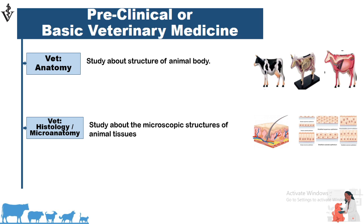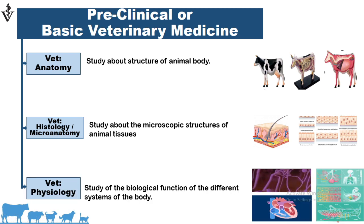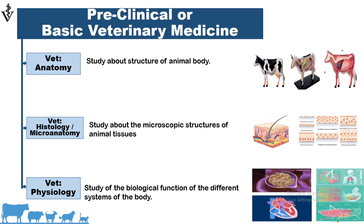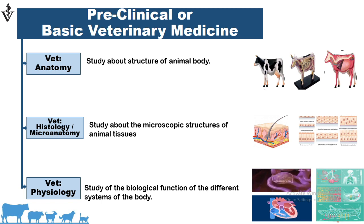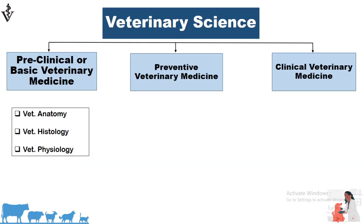For example, if we want to study the gross structure of a bone, that is anatomy; if we want to study the microscopic structure of a bone, that is histology. The third subject is veterinary physiology, a science in which we study the biological functions of the different systems of the animal body — how the many systems in an animal body perform their functions.